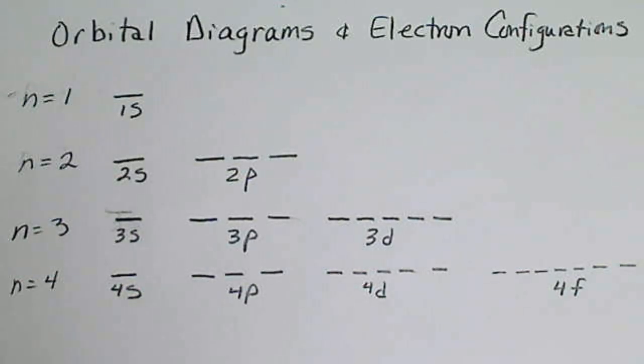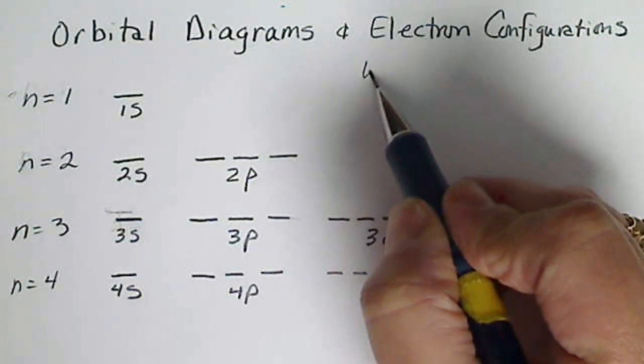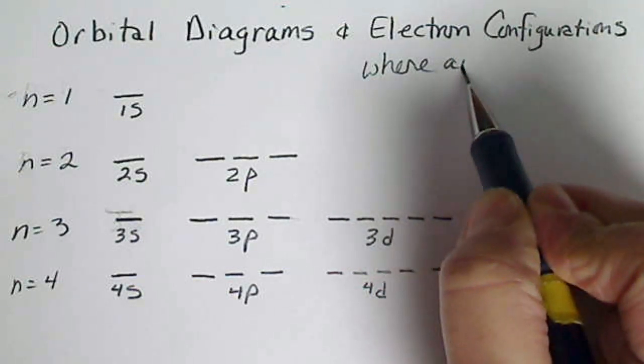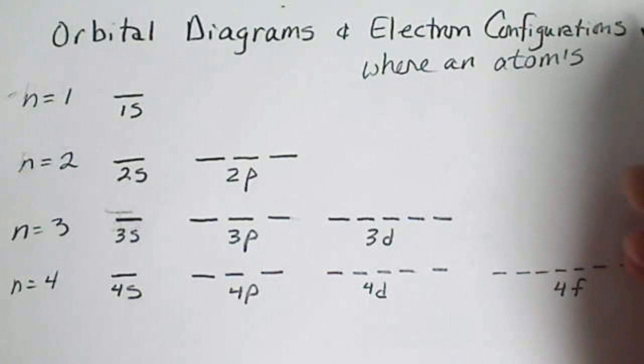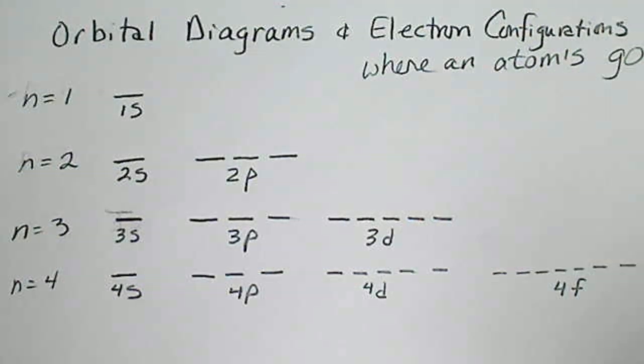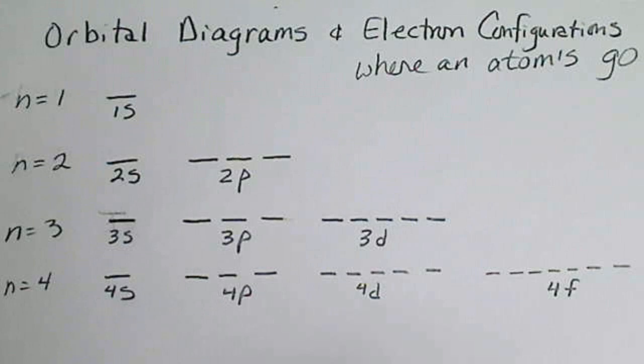When looking at orbital diagrams and electron configurations, we're going to discuss where an atom's electrons are, or I'll just say where they go, and the construction of an orbital diagram has to follow this specific pattern.